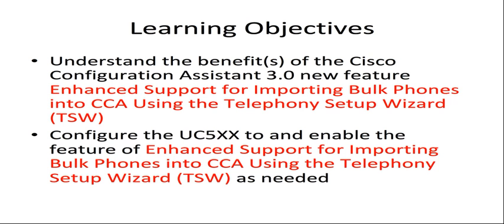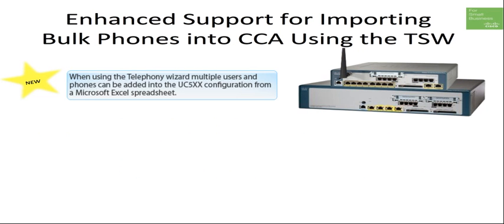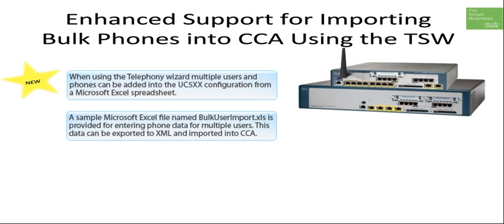Additionally, we will demonstrate how you can configure the enhanced support for importing bulk phones into CCA using the Telephony Setup Wizard feature as needed. Keep in mind that this feature is available on the Cisco Unified Communications 500 series when using the new Cisco Configuration Assistant 3.0. The Telephony Setup Wizard and an XML spreadsheet can easily be used to bulk add users and phones to an initial UC500 configuration. This is a tremendous benefit to all partners in reducing the time and effort for configuration of a new or reset UC500 for a customer.